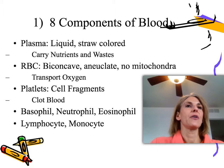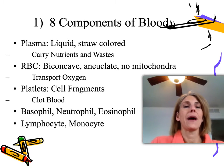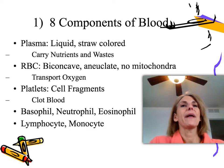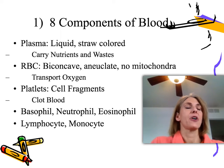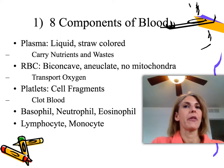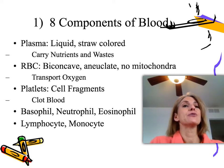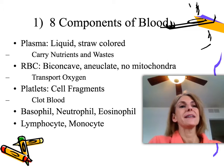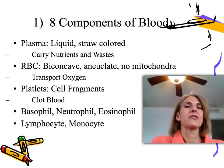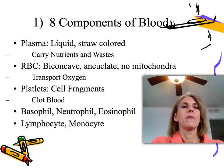You wanted to know their functions and descriptions. So plasma is typically straw-colored — it's the only liquid portion of blood. It makes up about 55% of the blood. It carries nutrients and waste. That's its main function: it's a mode of transport and a solvent.